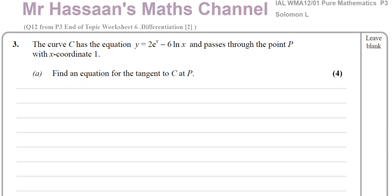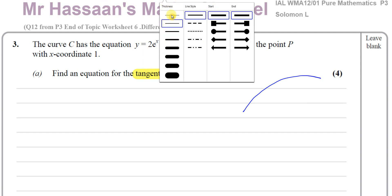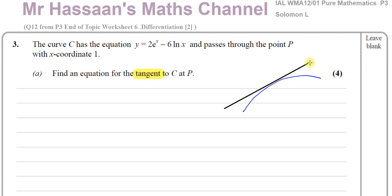We've got to find the equation of the tangent to the curve at P. A tangent to the curve is a straight line which just brushes past the curve at a particular point without cutting through it. At the point where it touches the curve, it shares the same gradient of the curve at that point. So the gradient of this line is the same as the gradient of this curve at point P.